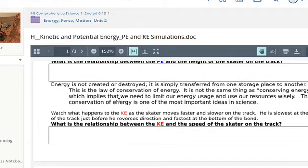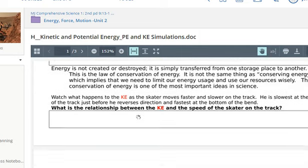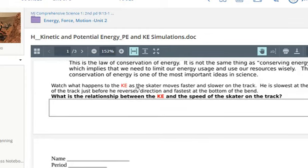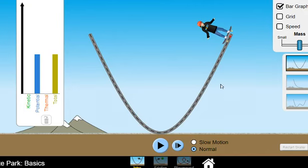Then I've got a classic right here, the law of conservation of energy. Energy can't be created or destroyed. It just transfers from one thing to another, which we are seeing here, right? We're seeing energy go from kinetic to potential and potential to kinetic. Watch what happens to the kinetic energy, KE, as the skater moves faster and slower on the track. He's the slowest at the top of the track just before he reverses direction and fastest at the bottom of the bend. I don't know. Is that true? Let's see. Push play.